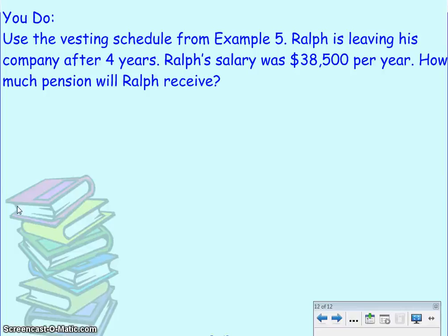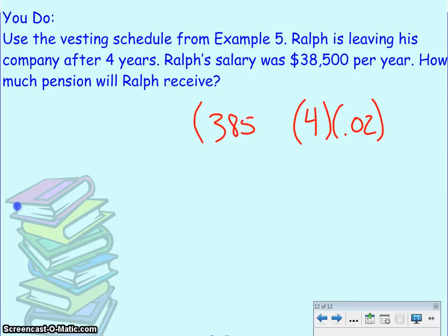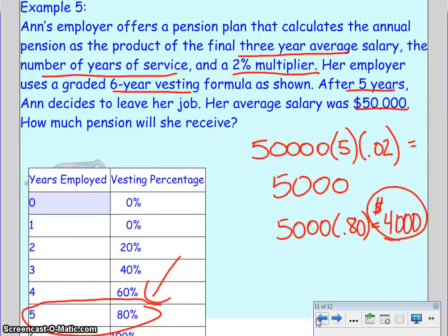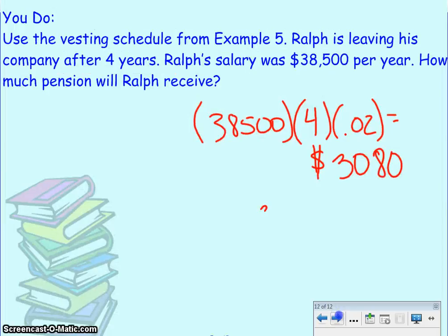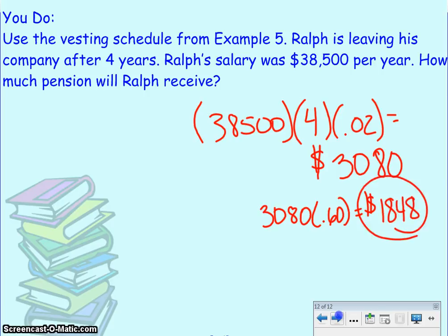Using the vesting schedule from Example 5, Ralph is leaving his company after four years. With the same 2% multiplier and an average salary of $38,500, his full pension is $38,500 × 4 × .02 = $3,080. Looking at the vesting chart, after four years he receives 60% of that: $3,080 × .60 = $1,848 annual pension from this company. That's it for 9.3 — good job, everyone.